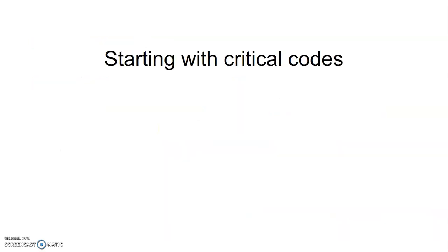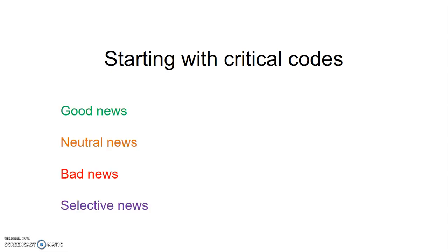Here's another example — let's start with critical codes to code that sentence up. Having taught lots of students over many years, students often love these four basic codes: is the writer talking about good news, bad news, neutral news or selective news? Also, is the writer giving a balanced argument or an unbalanced argument? A balanced argument would include advantages and disadvantages, good news and bad news. Unbalanced would focus either on all bad things or all good things — it would be very selective.